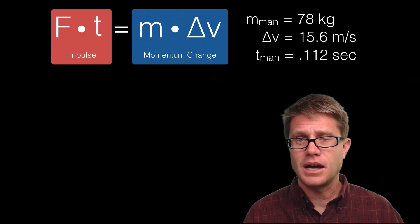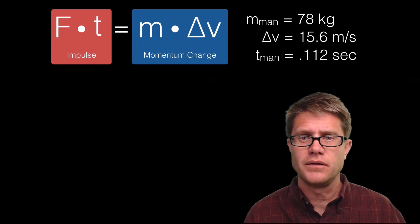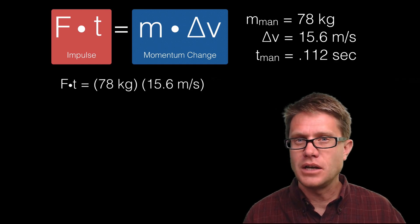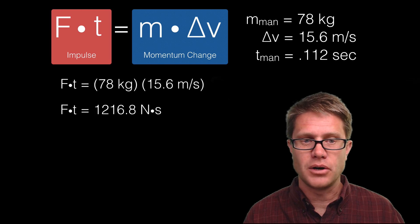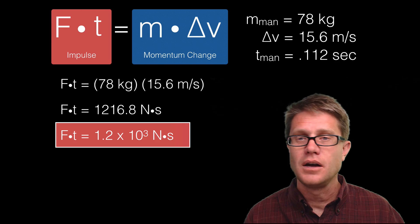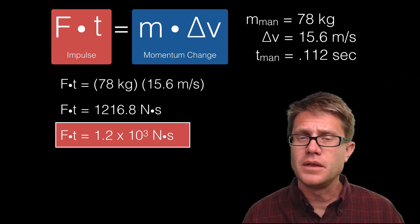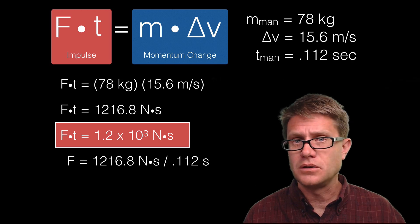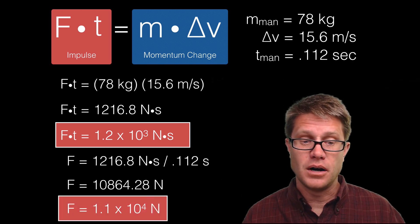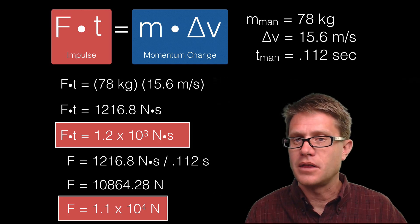Now for the person inside: impulse equals mass times change in velocity — 78 kg times 15.6 m/s — giving approximately 1.2 × 10³ newton-seconds. To find force, divide by the time of 0.112 seconds, giving a force of around 1.1 × 10⁴ newtons.